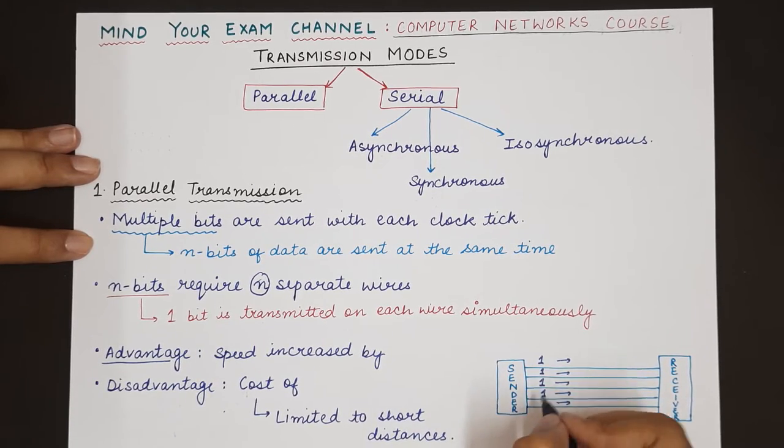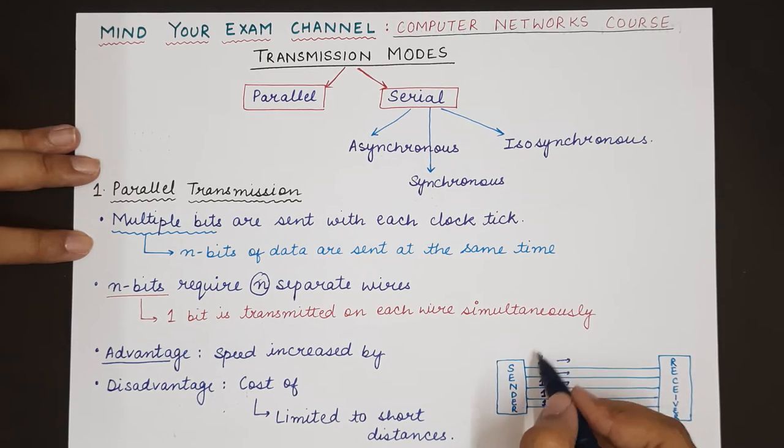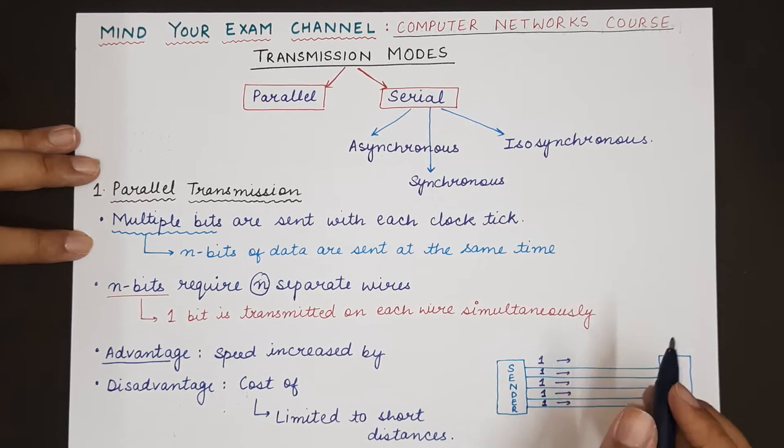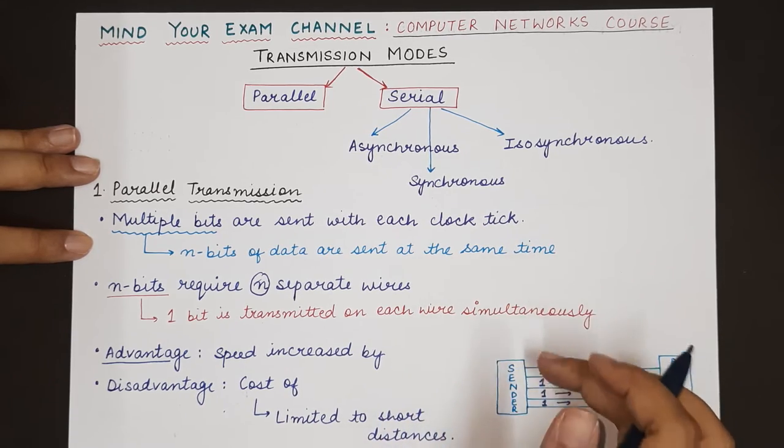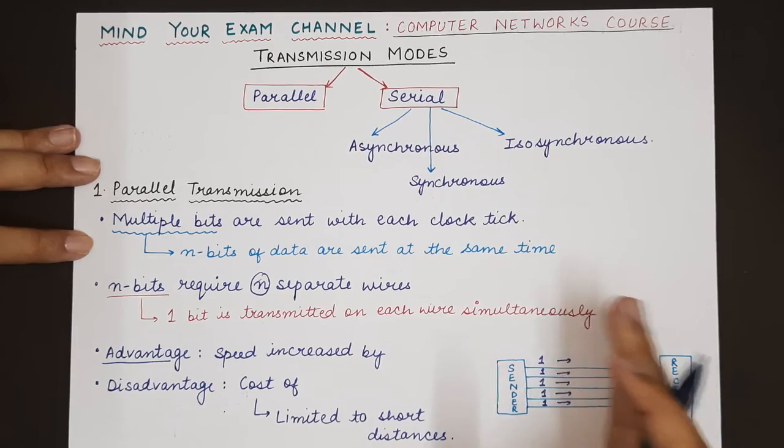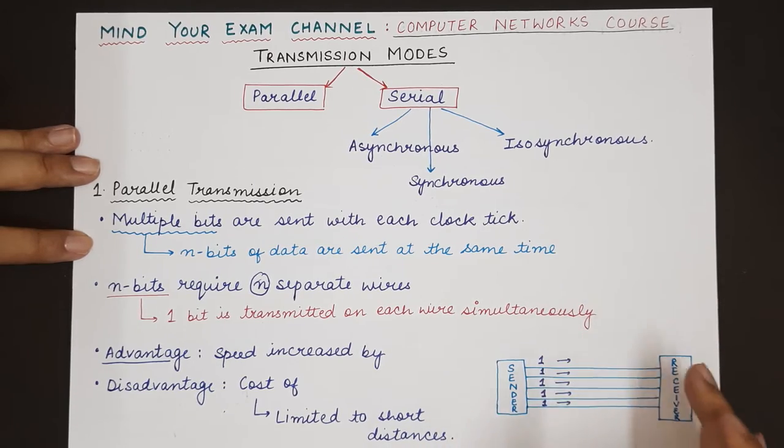He will maintain 5 different wires such that at every moment he will send 5 different bits. The bits can be different—it can be 0, 1, 0, any combination. But all these bits will be carried separately on each wire and they will travel simultaneously and reach the receiver.